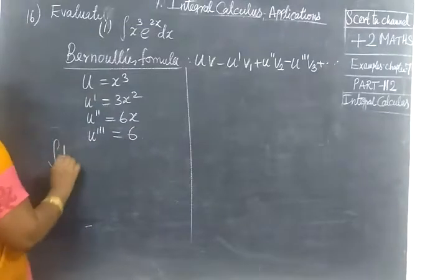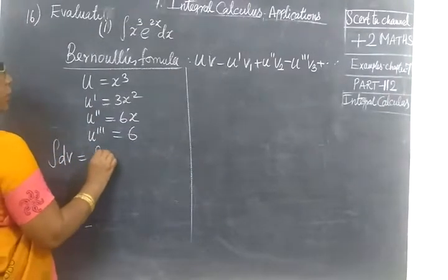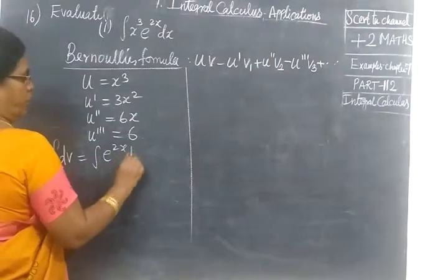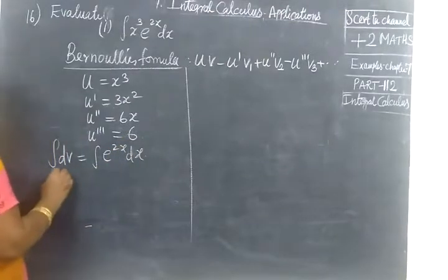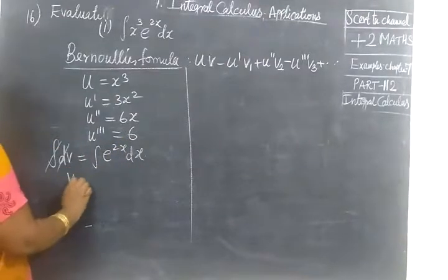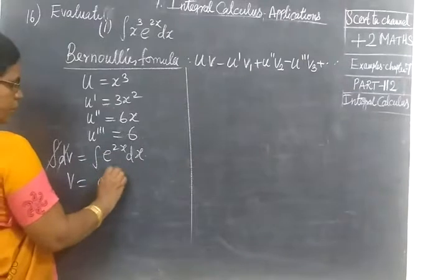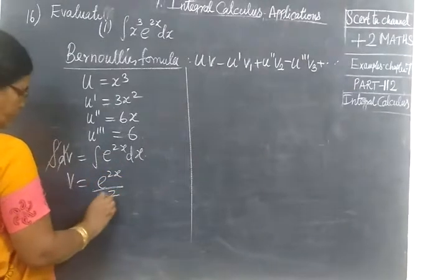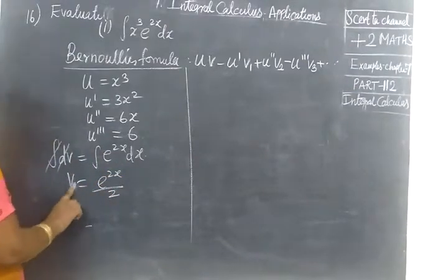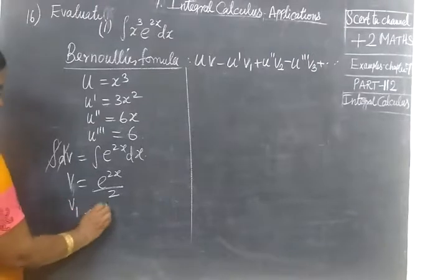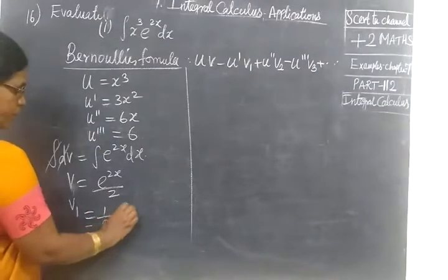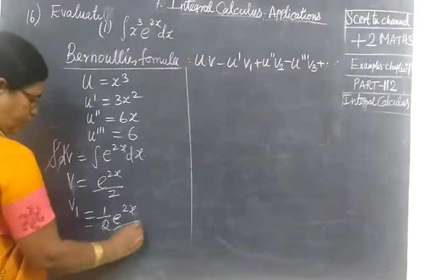Next, integrate dV equals integrate e^(2x) dx. V equals e^(2x) by 2. This is V. Next, V1 equals e^(2x) by 4.